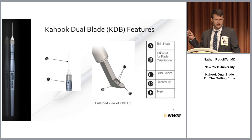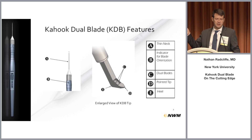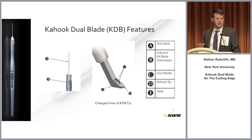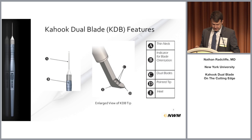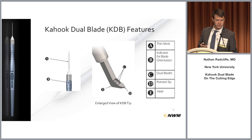The design of the Kahook Dual Blade involves two parallel blades. It's a disposable instrument so that when the tip is entered into the canal of Schlemm, the two blades will excise a strip of trabecular meshwork including the outer wall of Schlemm's canal. It looks similar to other instrumentation used in the angle and is done with gonioscopic visualization.